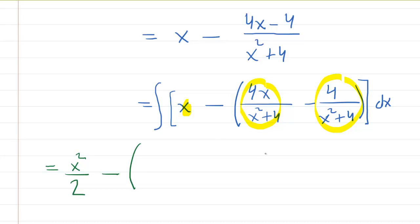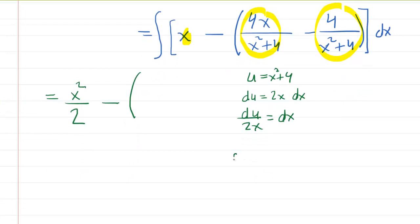Now, the second one, we'll have to use a u sub. So we'll let u equal the denominator of x squared plus 4. We'll differentiate both sides with respect to x. So du will equal 2x dx and then we'll solve for dx. So divide both sides by 2x and that will give you your dx. Then we go back and resubstitute. So we'll have the integral of 4x over our u, since u was the denominator, x squared plus 4, times dx, which is now du over 2x.